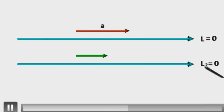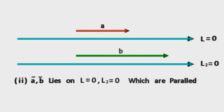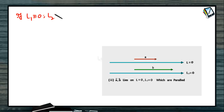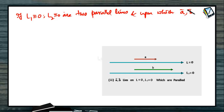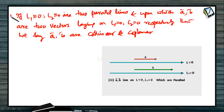The second case: if a-bar and b-bar lie on two different lines L1 and L2 which are parallel, then they are said to be parallel vectors. That is, if L1 and L2 are two parallel lines, with a-bar lying on L1 and b-bar lying on L2, then a-bar and b-bar are collinear or parallel vectors.